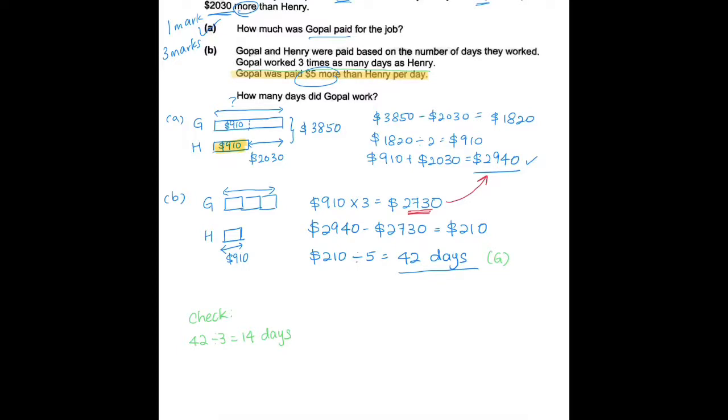He was paid $910 for his 14 days of work. So $910 divided by 14 will give me $65. So every day, Henry was paid $65. Remember the question also said that Gopal was paid $5 more, so I'm going to add $5, which will give me $70. If my answer here is correct, if I take $70 per day that he was paid, times 42, I should get $2,940, which is my answer for part A. So this is how I know that my answer is correct.